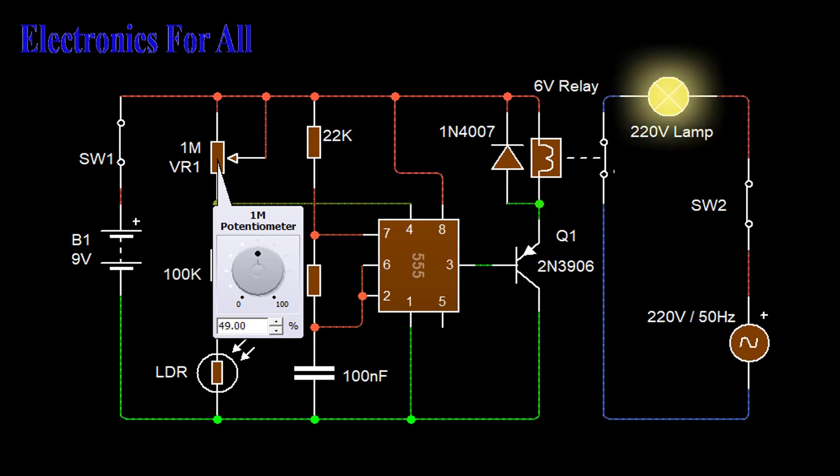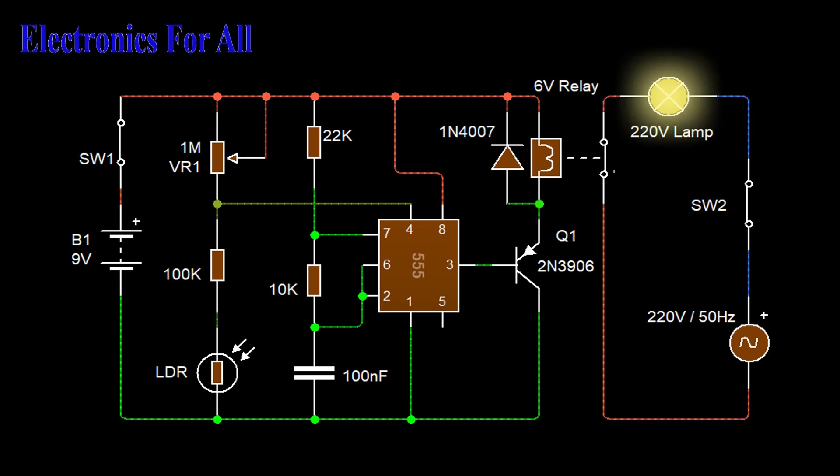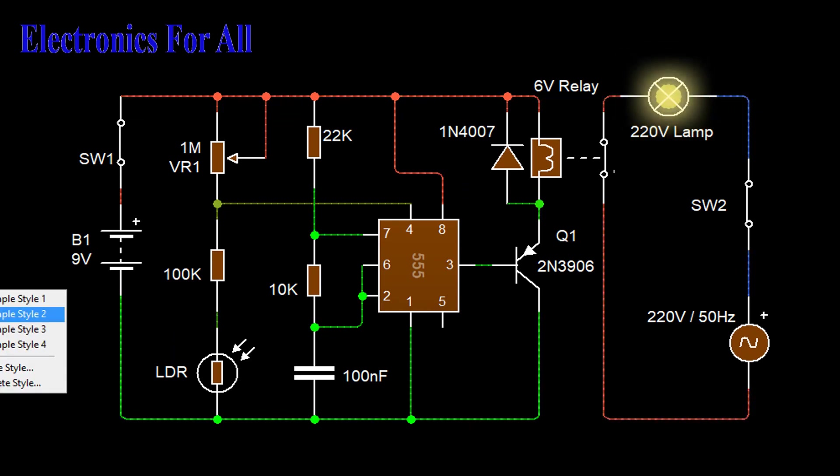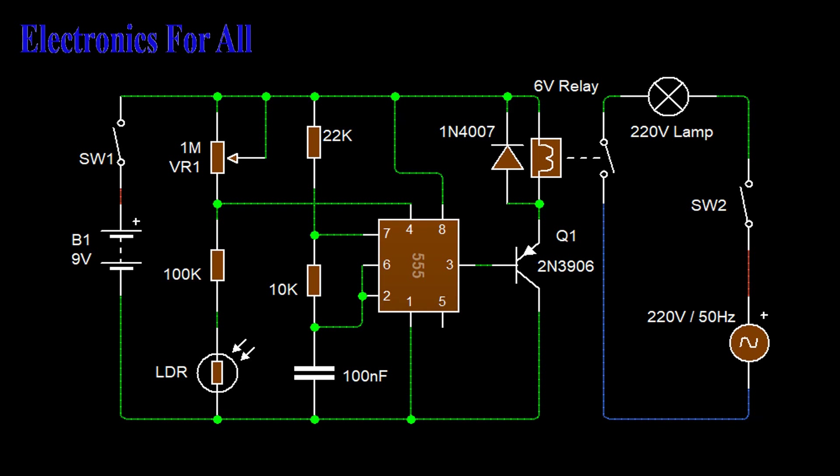Since the reset pin of 555 is low level triggered, the timer IC will be in reset mode continuously and so there will be no square wave output as it should be. From this we can conclude that in the presence of light, the 555 IC will be in complete reset and provides no output.